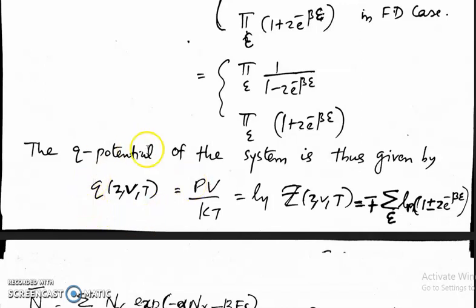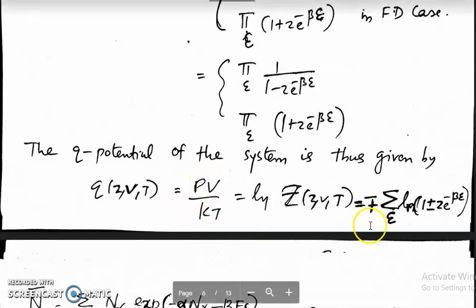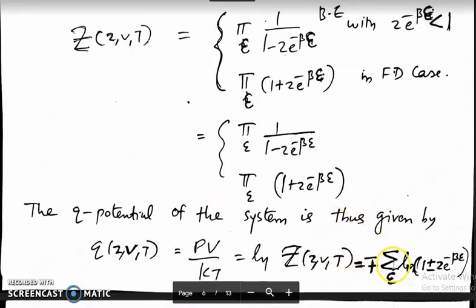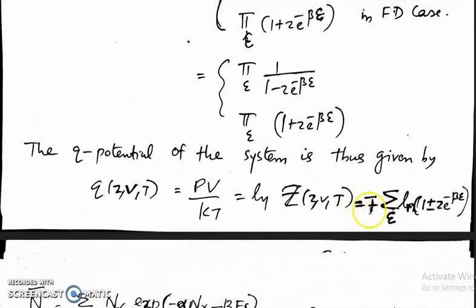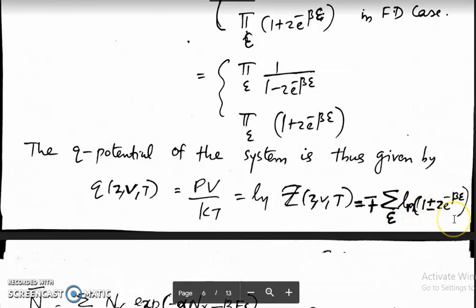In the grand canonical ensemble, we defined this quantity Q potential, which is the log of the grand partition function, equal to PV/KT. That equals minus Σ_ε log(1 − z·e^{−βε}) for the Bose-Einstein case, and plus Σ_ε log(1 + z·e^{−βε}) for the Fermi-Dirac case.